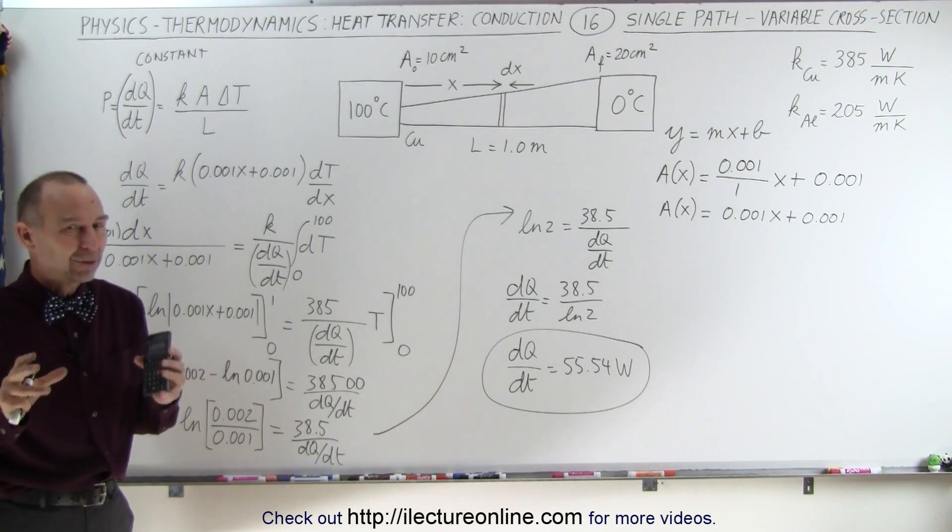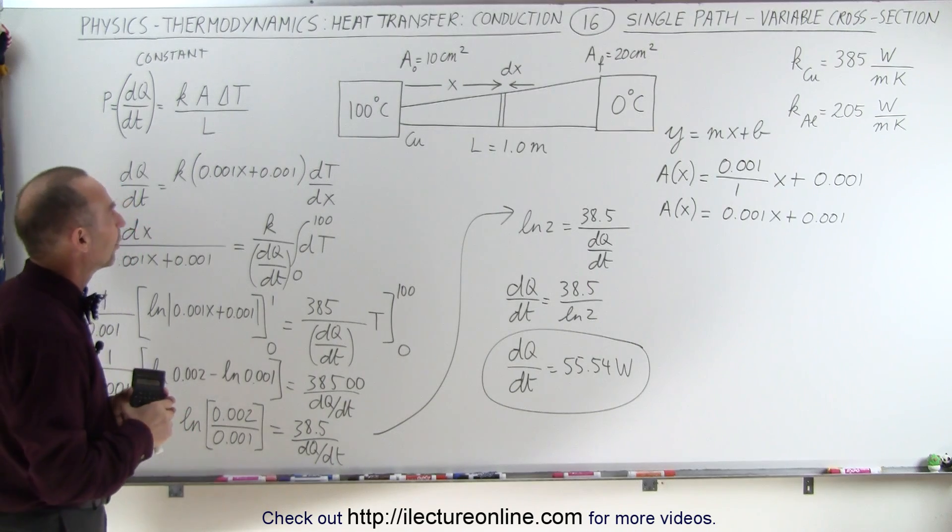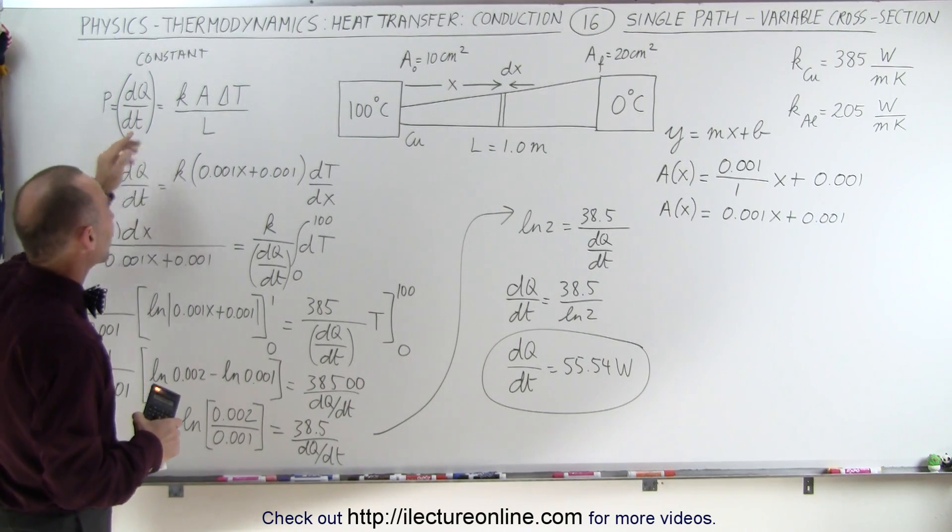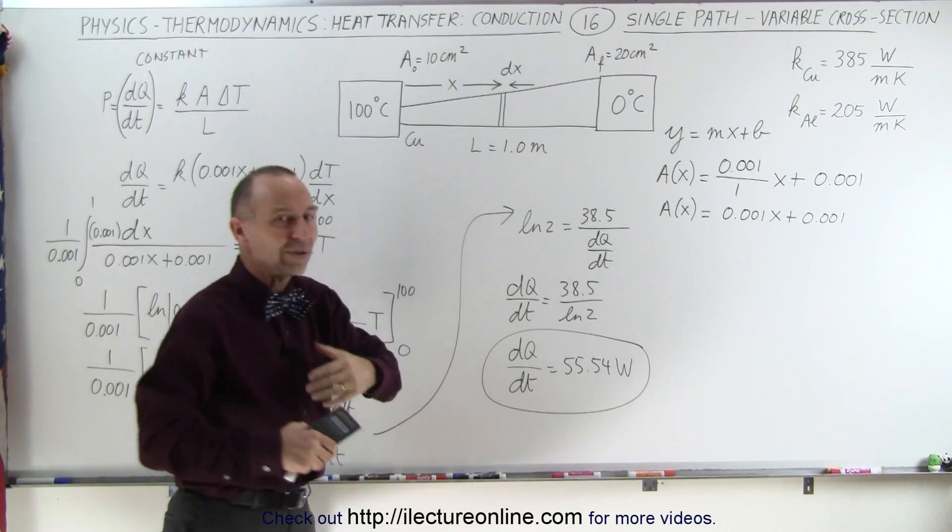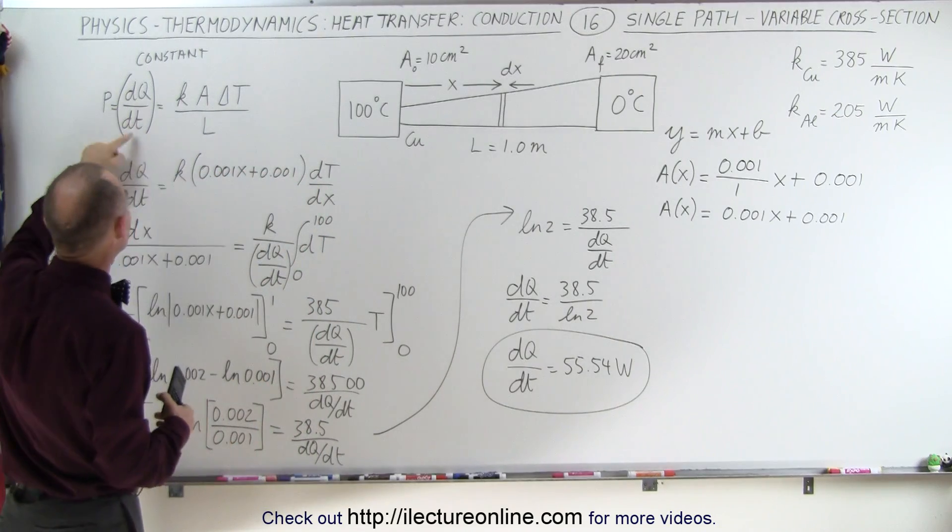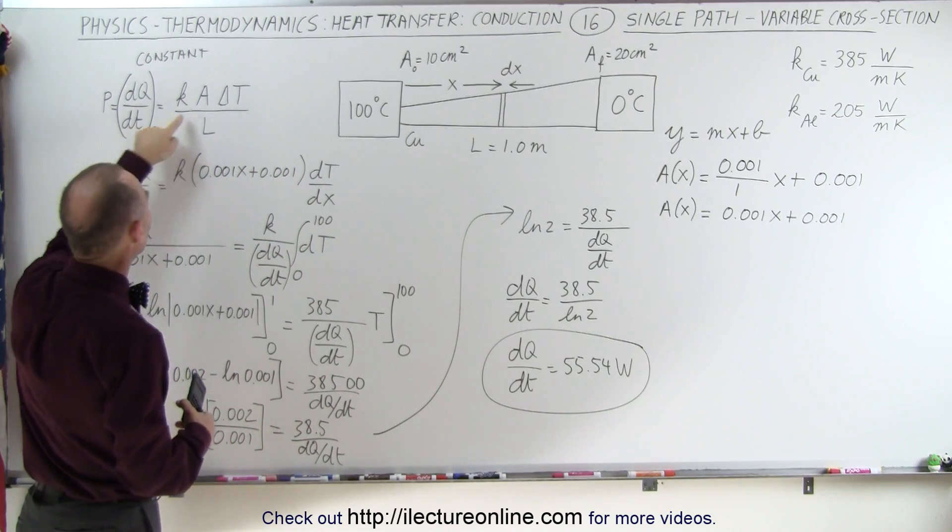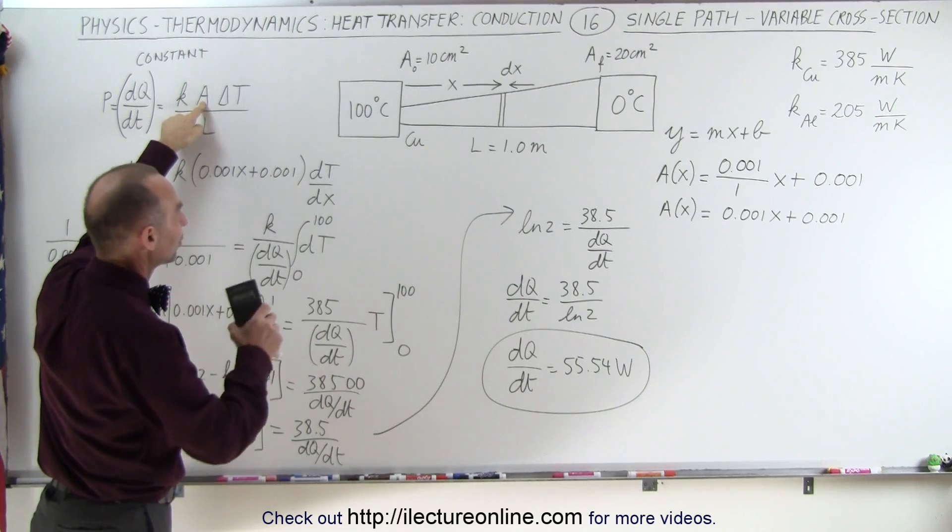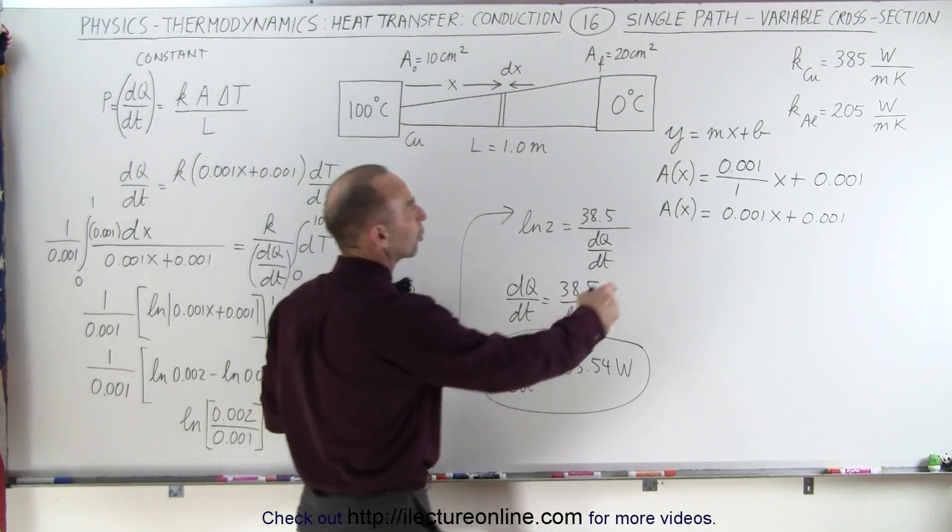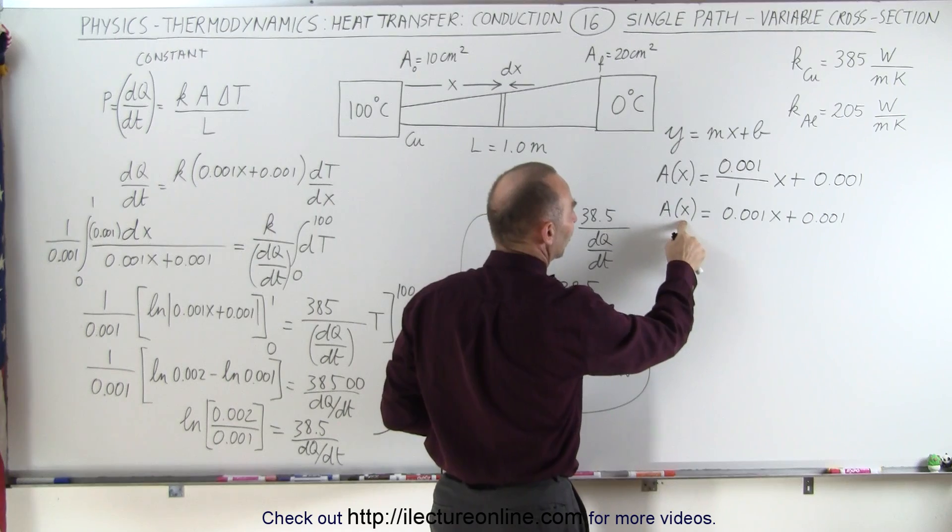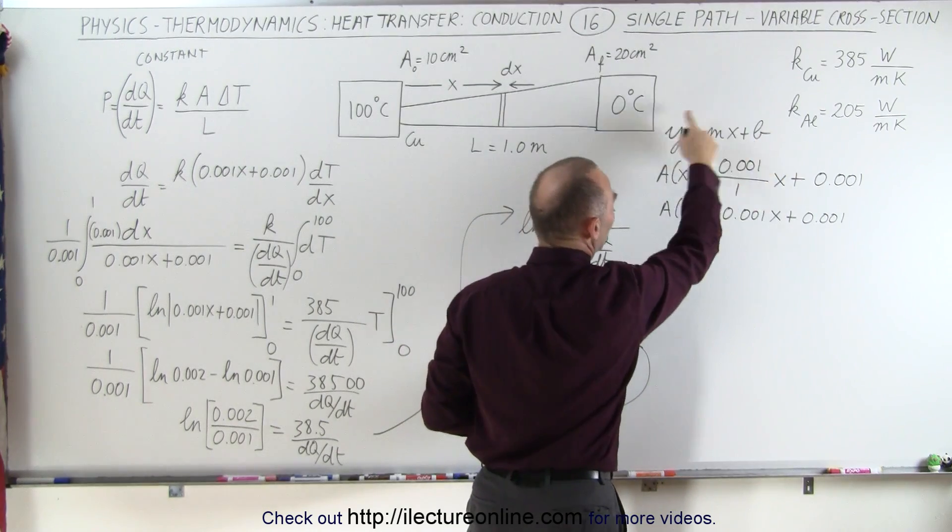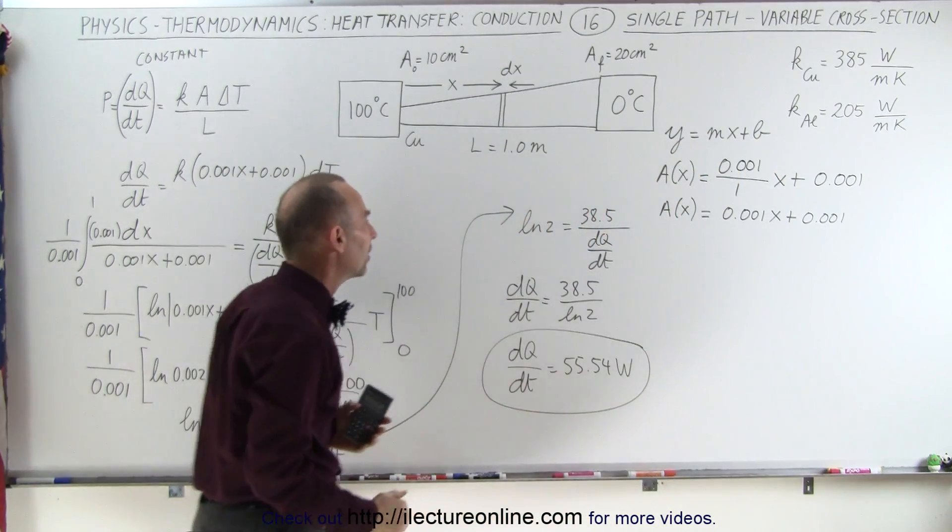So let's recap to see what's important here. You have to realize that the amount of heat traveled in any one given section always has to be a constant, so dQ/dt simply becomes constant. Our cross-sectional area will vary, and so we have to come up with an equation that describes the cross-sectional area as a function of position, kind of in the same way as we have y equals mx plus b.